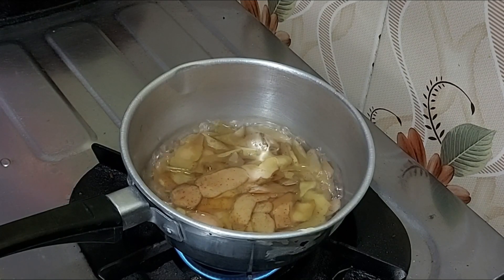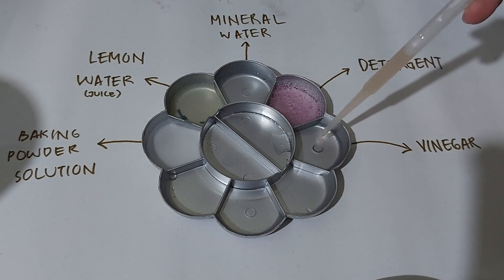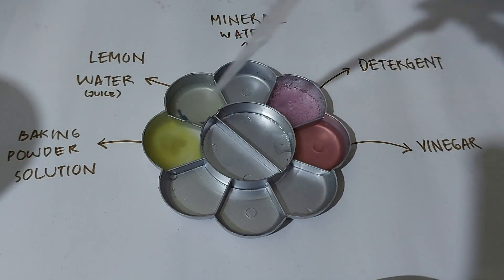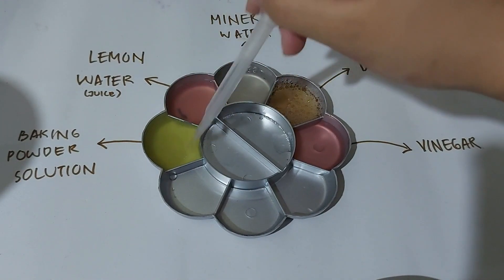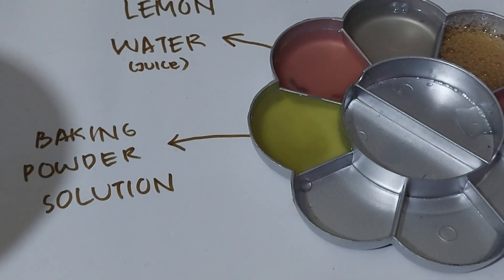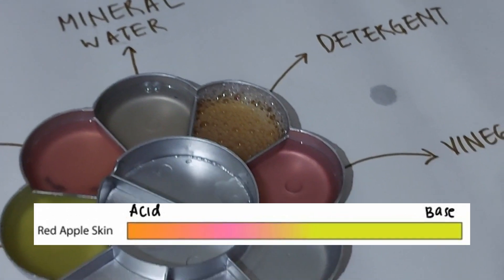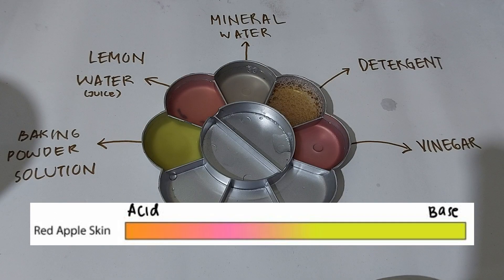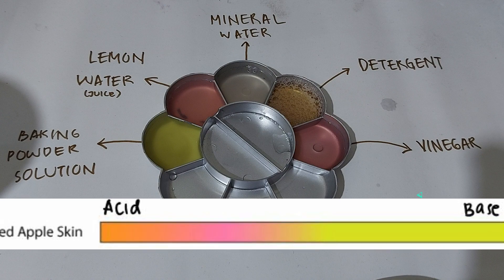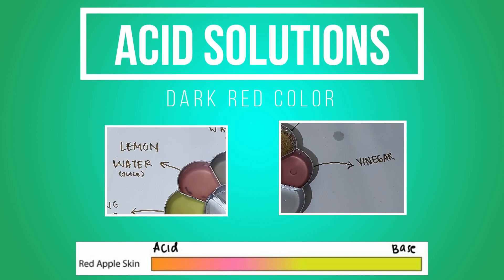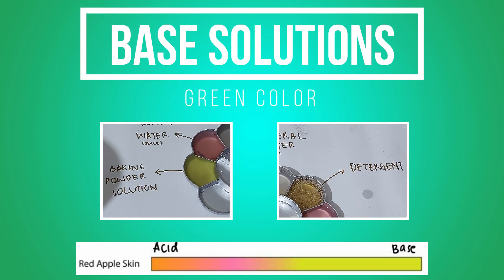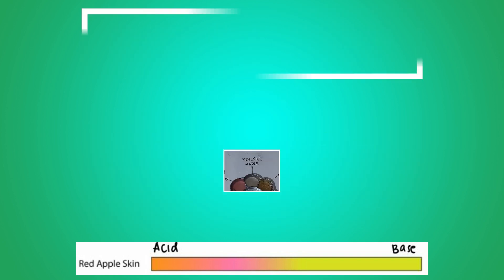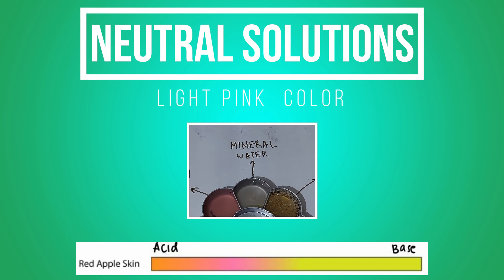After it's cool, now let's test the acid and base solutions. Put a few drops of apple skin extract in each solution with a pipette. Stir well and pay attention to the color changes. Now all the solutions are mixed and we can see various colors produced. According to the pH chart, acid solutions are likely to produce a darker red color and base solutions are likely to produce a greenish color. Vinegar and lemon juice are categorized as acid because they have dark red color. Detergent and baking soda are base solutions because they made green color. And for mineral water, we got light pink color, which means mineral water is a neutral solution.